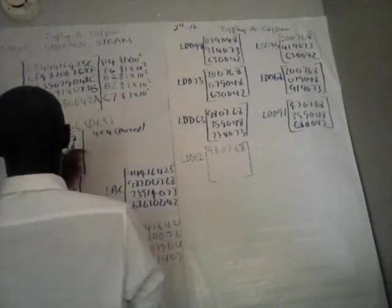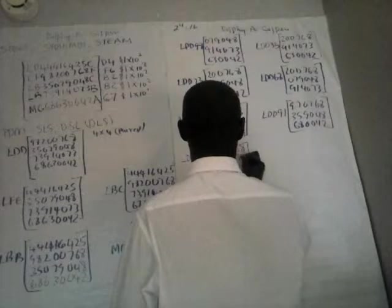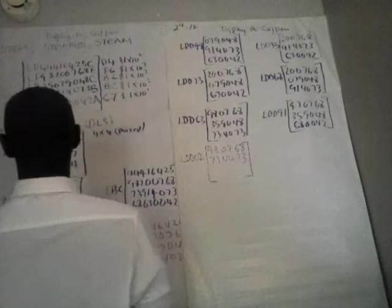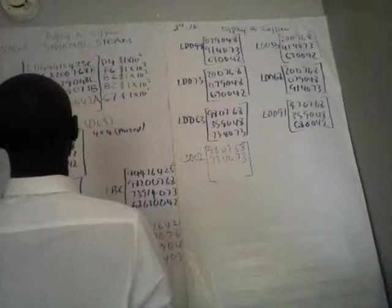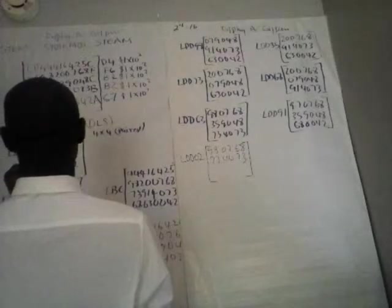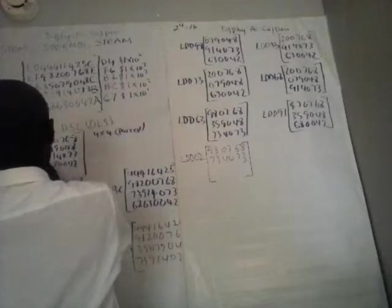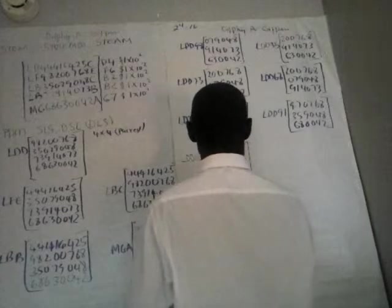LDD 02: we have 980768, and 4073, and 68-0042.